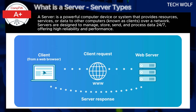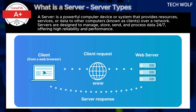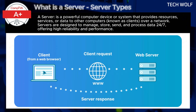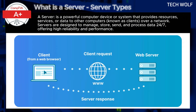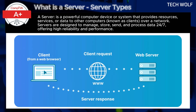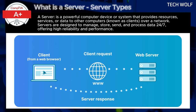How servers work: A server operates by listening for requests from clients. When a client sends a request, for example requesting a web page or file, the server processes the request, retrieves or generates the requested data, and then sends the response back to the client. Servers can handle multiple tasks simultaneously and serve many clients at once.